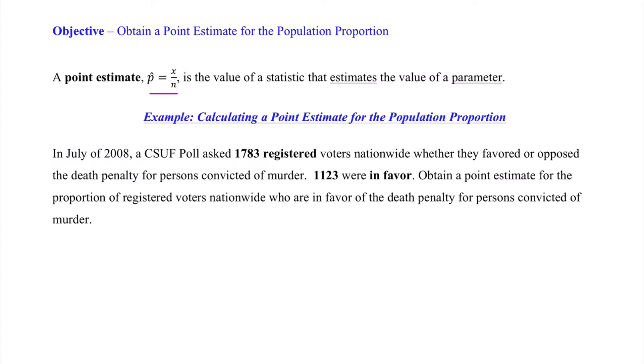So just like we did previously, that means 1,783 represents our sample size, and 1,123 would be the number of people that were in favor, so that's our x. And since we're finding a point estimate for the proportion of voters who were in favor, we know we're just finding a p-hat, which is our x over n, and that would be our 1,123 over our 1,783, and that gives us a p-hat of 0.6298.